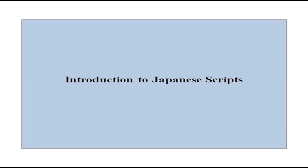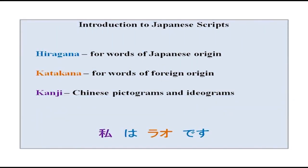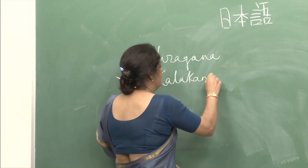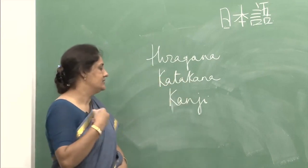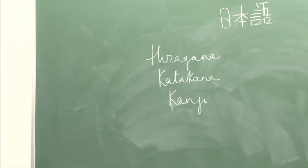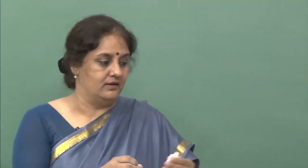There are three scripts in the Japanese language: hiragana, katakana, and kanji. The hiragana and katakana are called the kana scripts, while kanji are the ideograms and pictograms. We will discuss kanji in detail later, but first we should talk about hiragana and katakana. It is interesting that until the fourth century AD, the Japanese did not have a script — they had a language, they could speak freely, but there was no writing system.